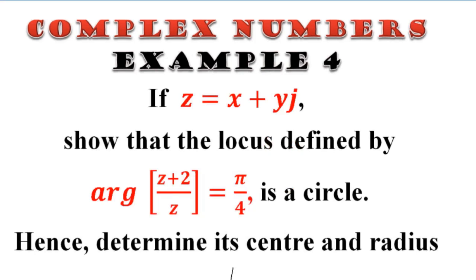In Z equals X plus JY, so that the locus defined by the argument of (Z+2)/Z equals π/4 is a circle. Hence determine its center and radius.